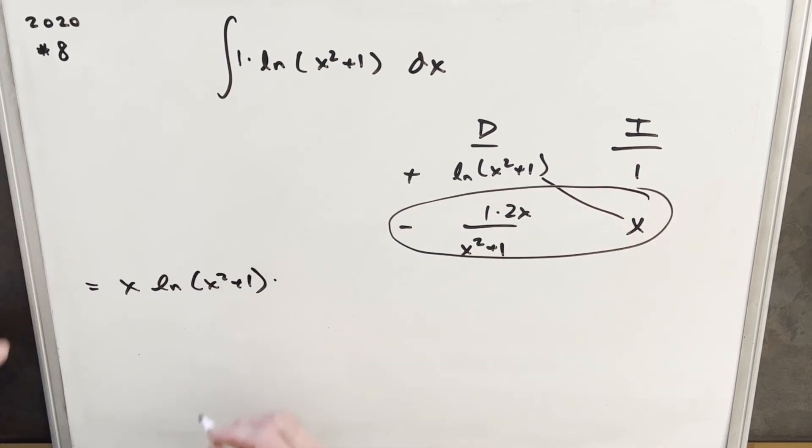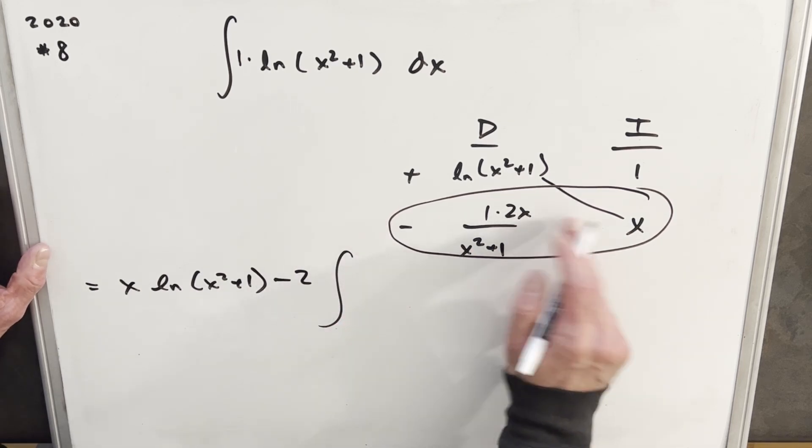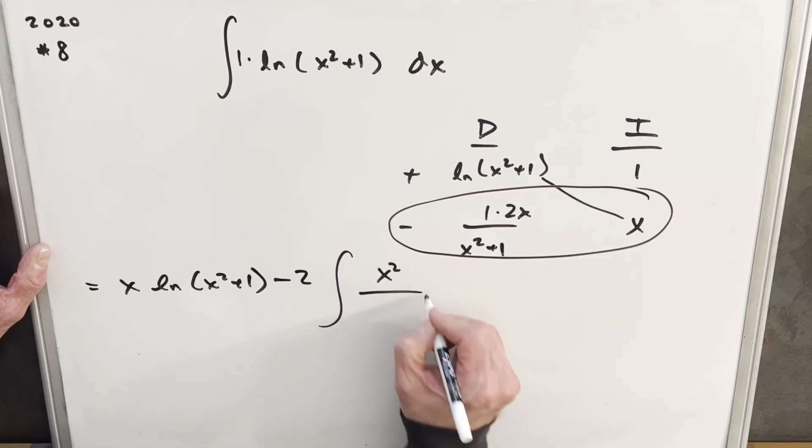So we're going to have, so I'll bring the two up front minus two. So I'll have minus two. And then multiplying x times x, we're going to have x squared over x squared plus one dx.